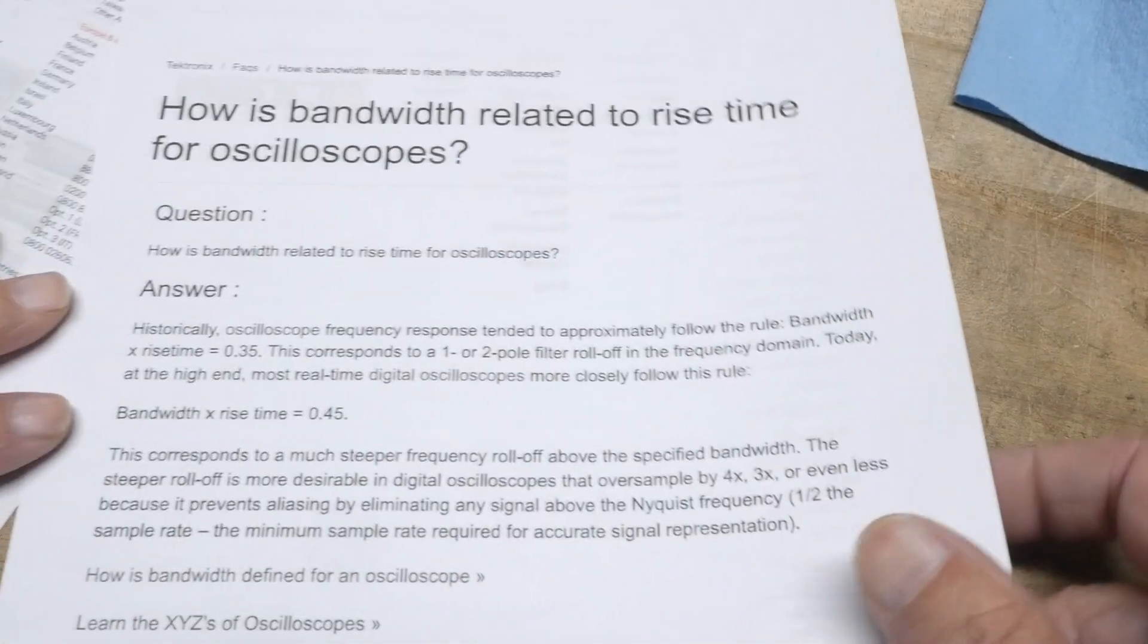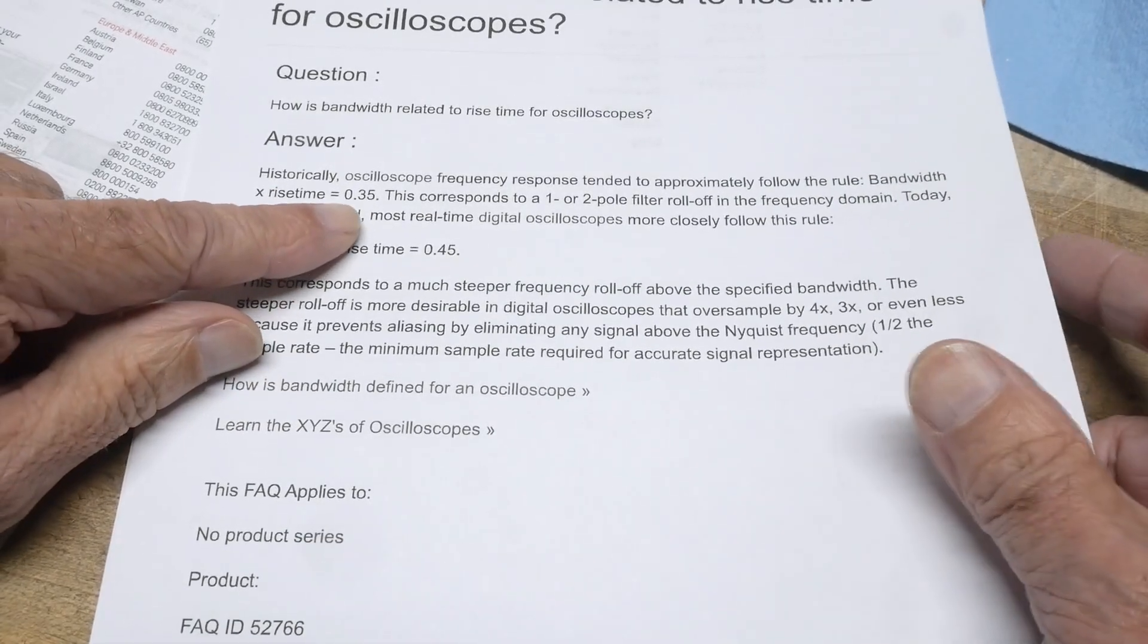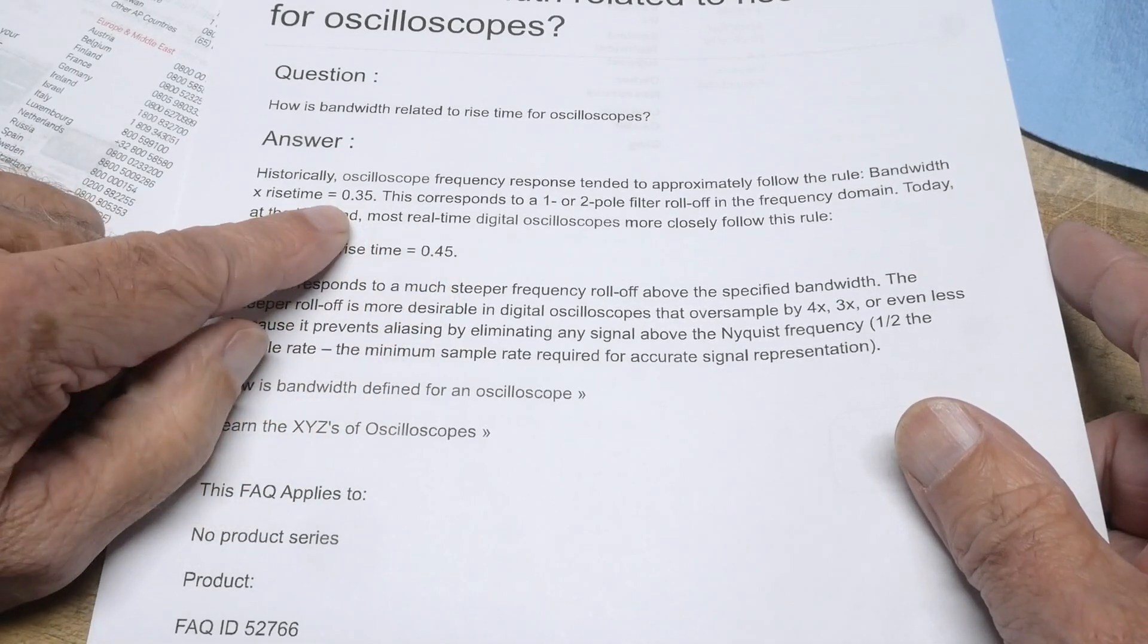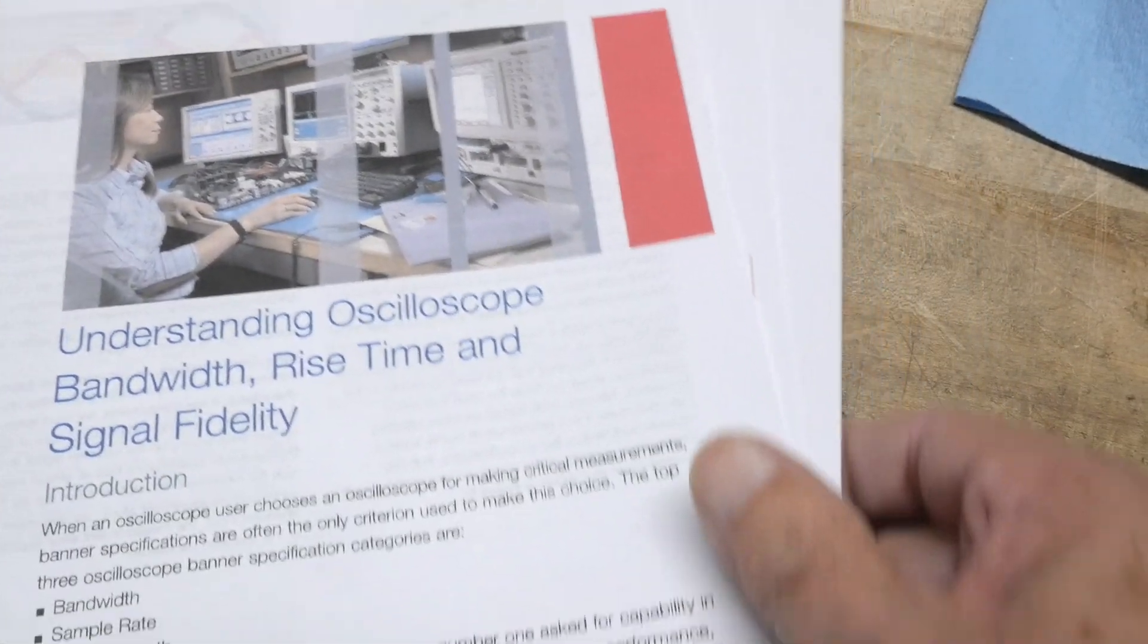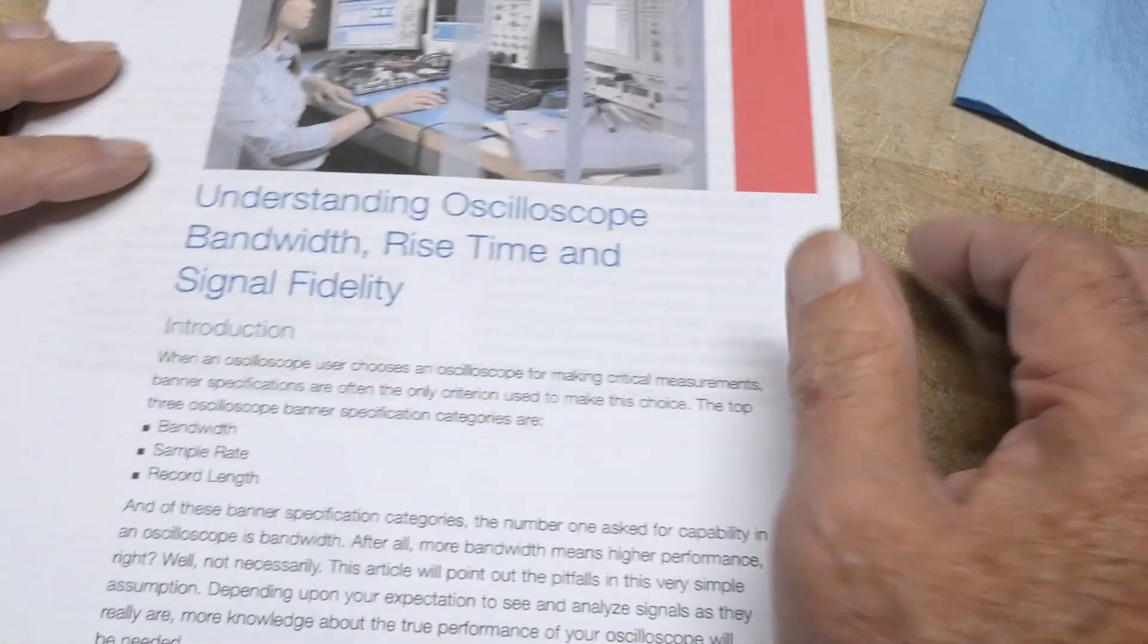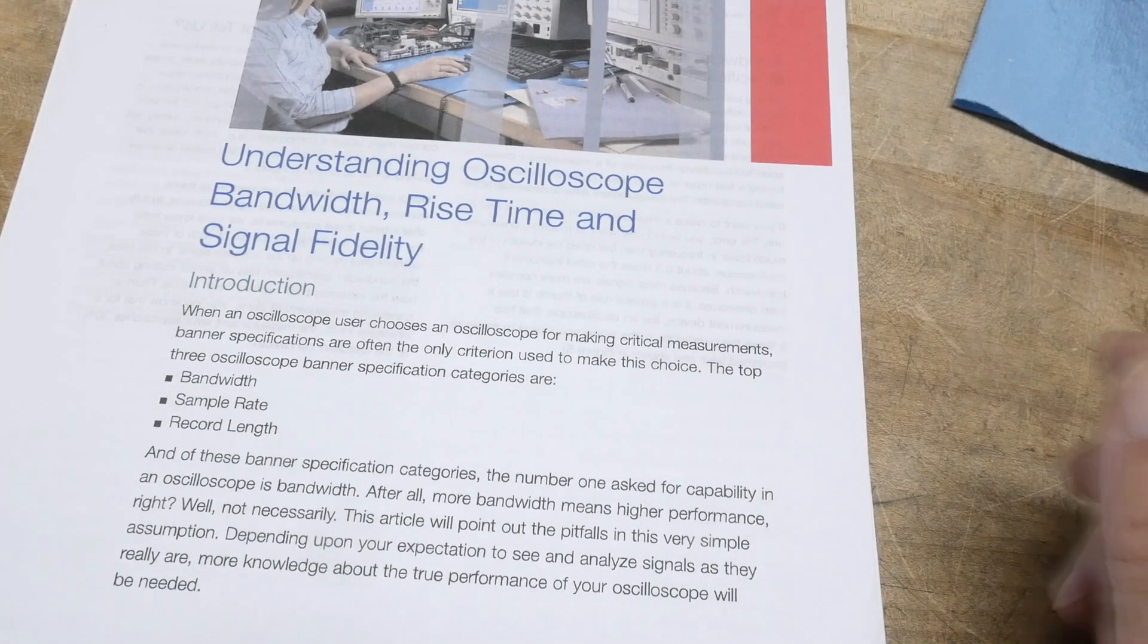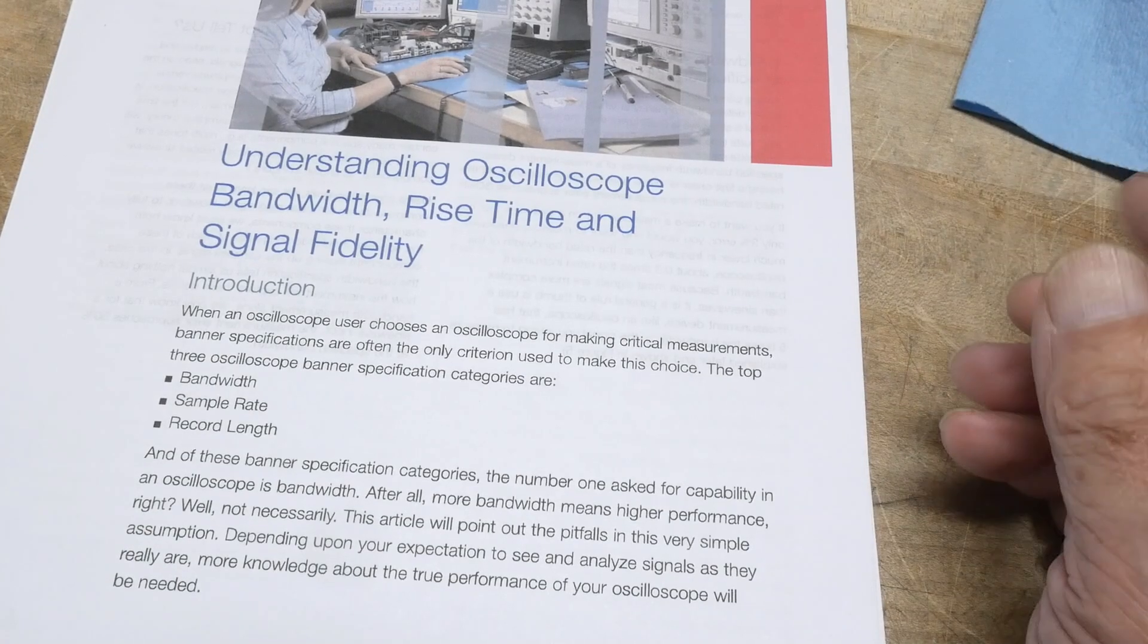Here's a thing on bandwidth and rise time from, these are answers, questions and answers from Tektronix. And it talks about the magic 0.35 number again. But then it says, oh, by the way, modern oscilloscopes might be 0.45 instead of 0.35. Uh-oh. Now what are we going to do? So you will get, in the old days it was always 0.35. No questions asked. But these days you will see the numbers 0.4 and 0.45 used instead of the 0.35.